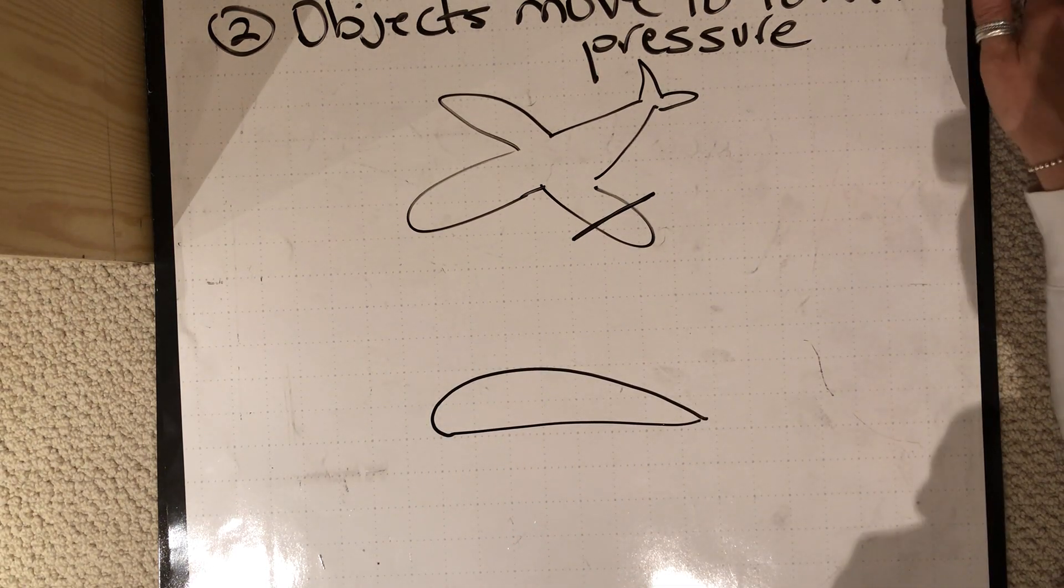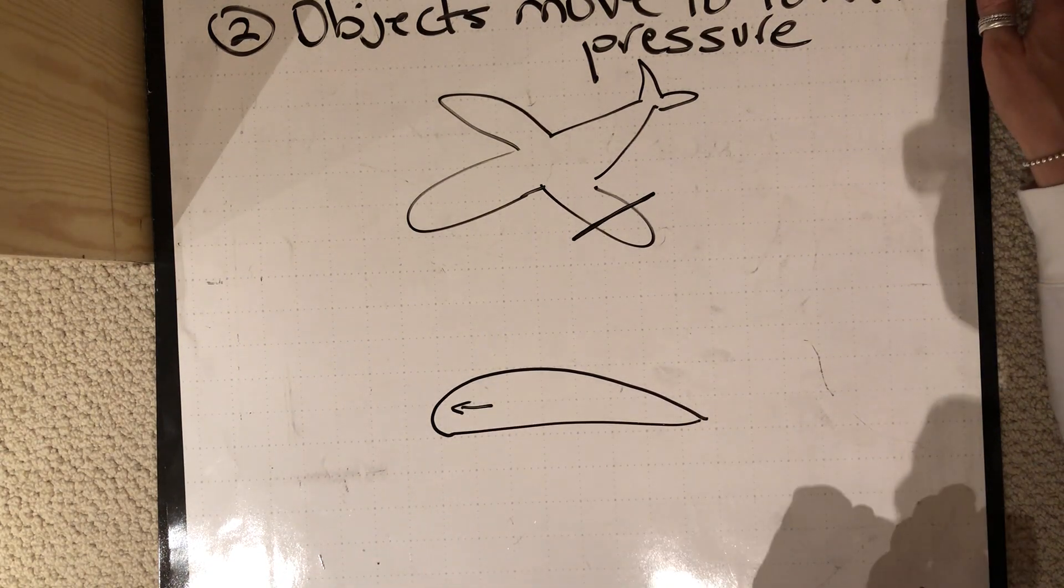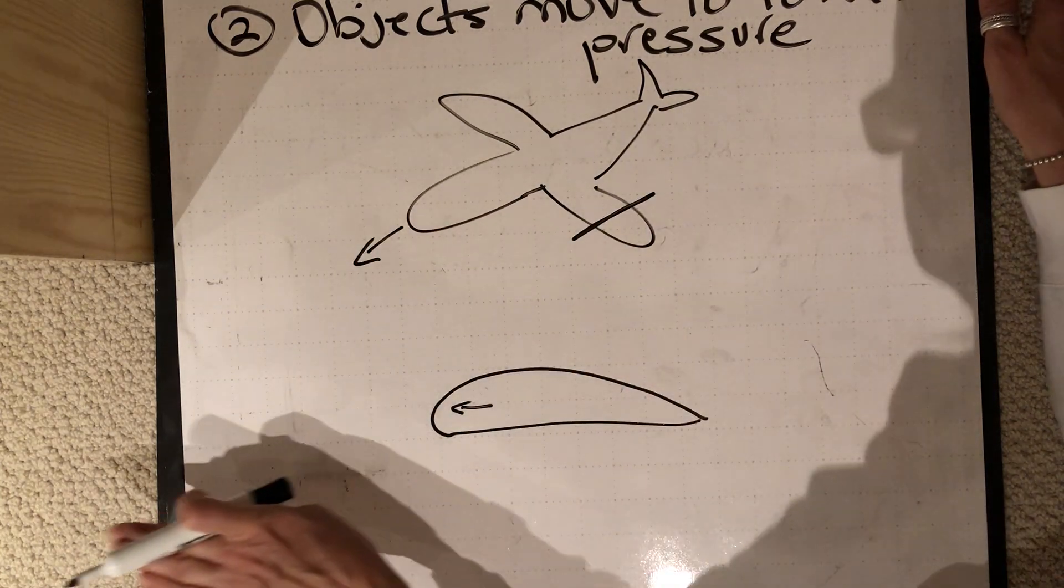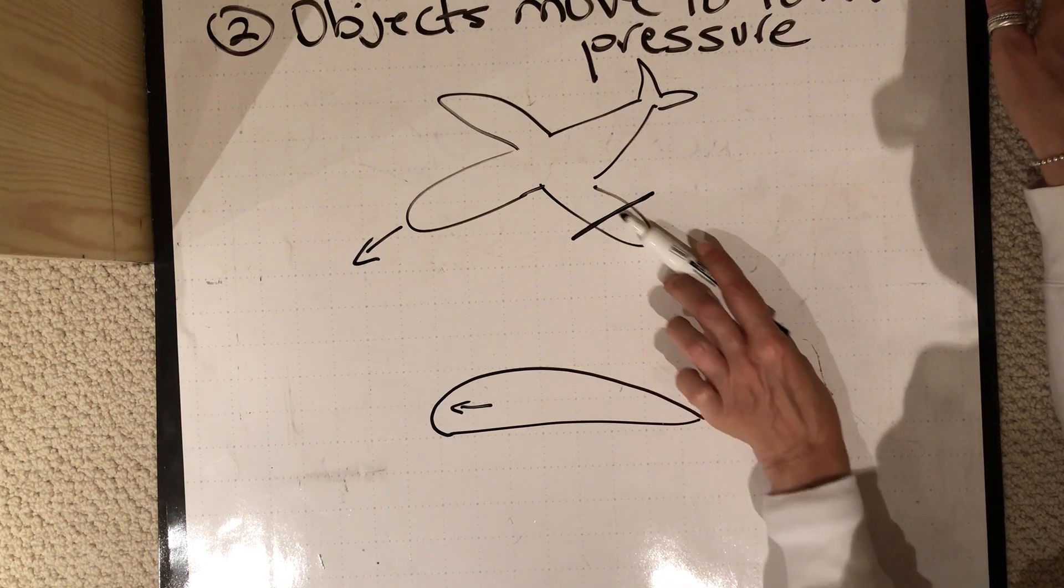So it's kind of got a curved top and a flatter bottom, and the plane is moving in this direction. So the same way that this plane is moving, that's the way this wing is moving as well. So this is like a cross-section, we've cut it here and we're looking at the wing this way.